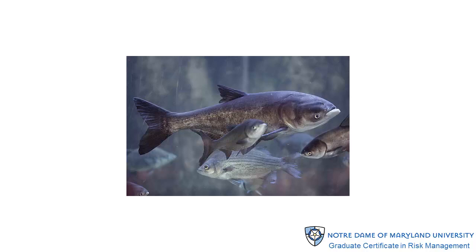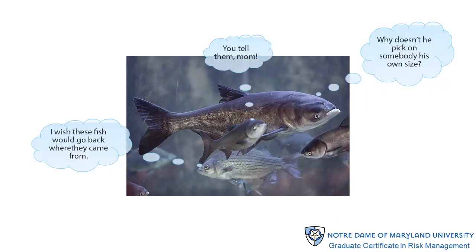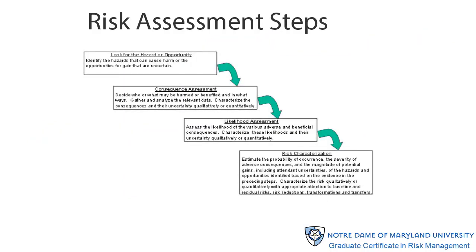Let's continue to use the GLIMRIS example to think about this a little more carefully. We'll use the risk of the silver carp to the Great Lakes basin as our example. Take a moment to consider how the generic process we are working on is consistent with the generic risk assessment model introduced earlier in the course.